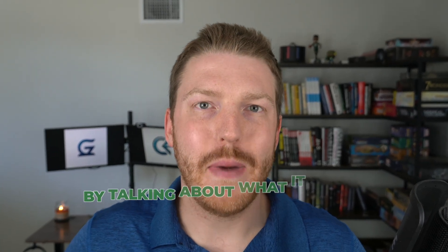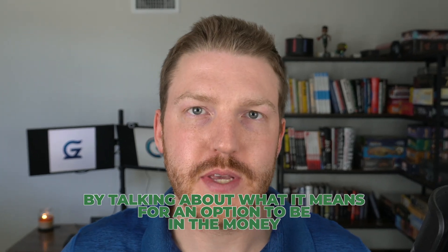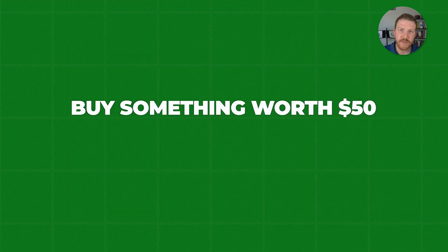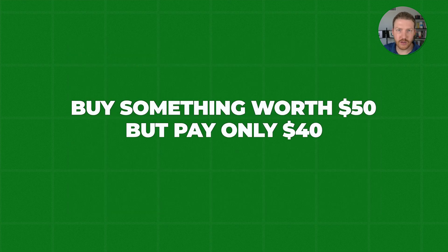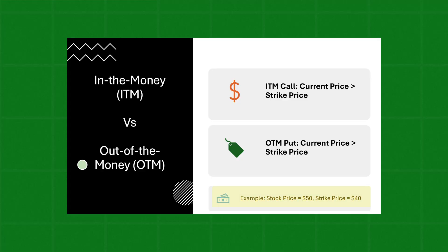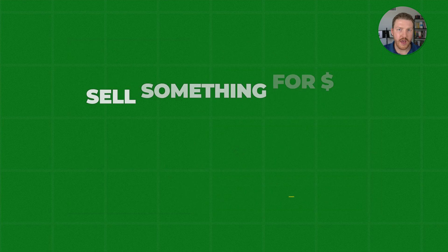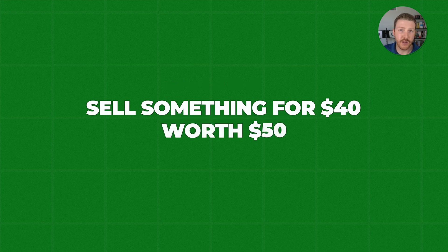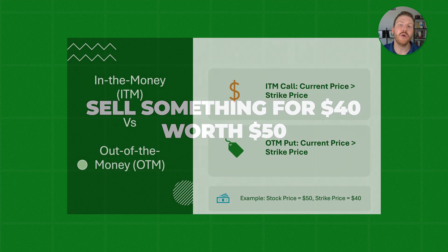Let's make intuitive sense of that formula by talking about what it means for an option to be in the money. A call option will be in the money when the stock price exceeds the option's strike price. So if the stock price is $50 and the strike price is $40, that means I can buy something worth $50 and pay only $40 — I am in the money by $10. A put option is the reverse: if the stock price is $50 and the strike price is $40, I would be selling something for $40 that's worth $50, which I would never do, so the put option would be out of the money.